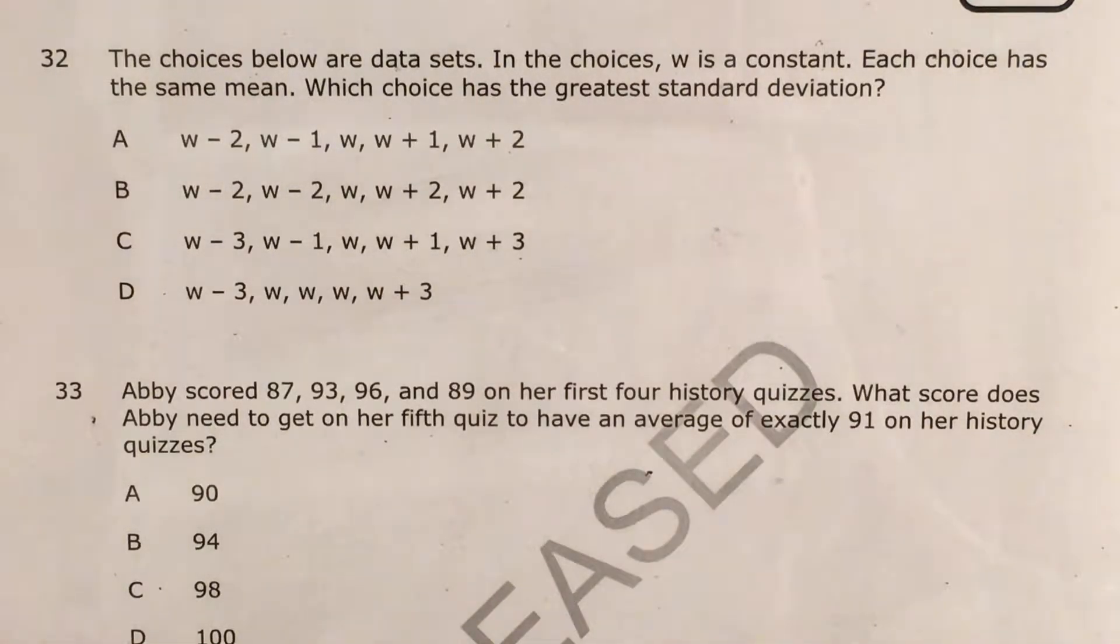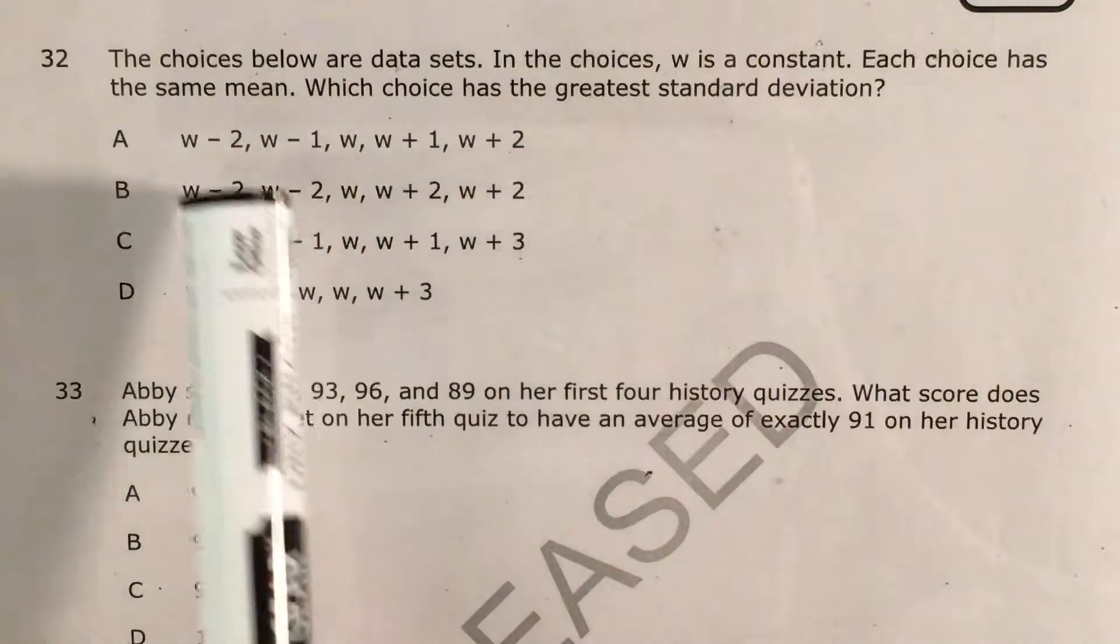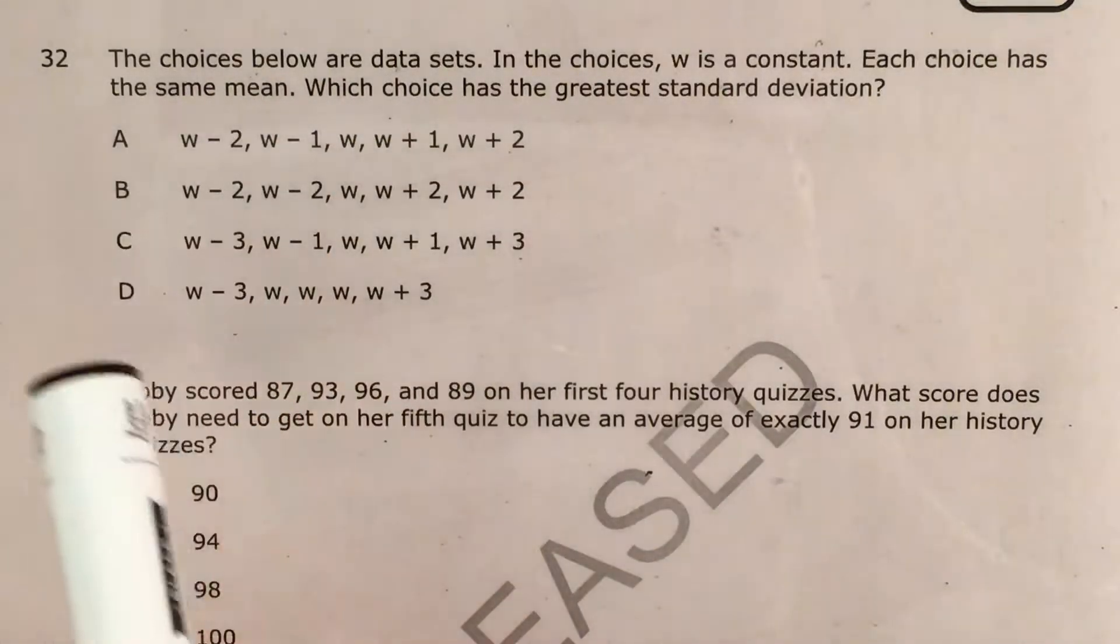Today we're going to tackle question 32 in the Math 1 questions that North Carolina released this past school year. The question says that the choices below are data sets where W is a constant and everything is in terms of W. So we have W minus 2, W plus 2, minus 1, plus 1, and so on.